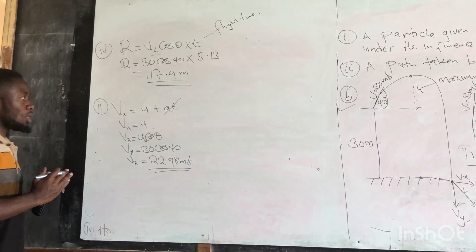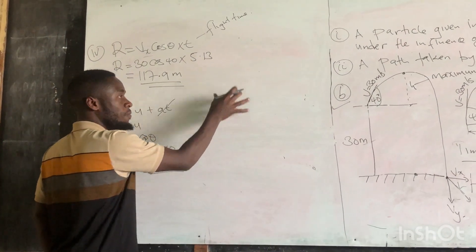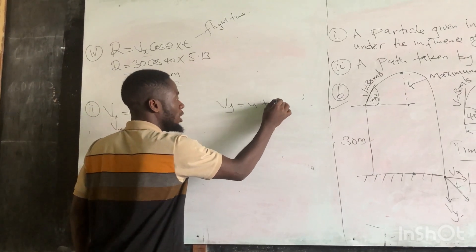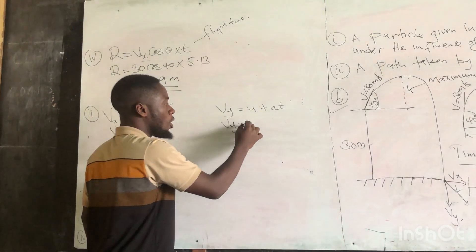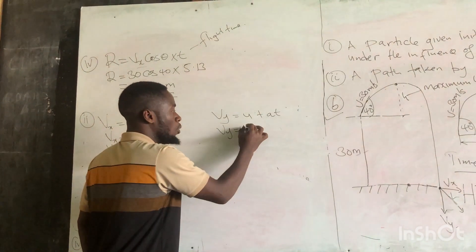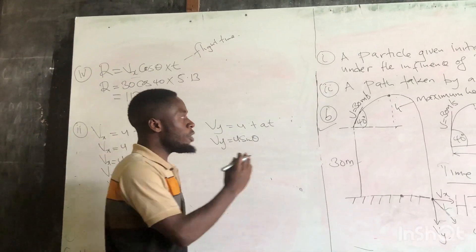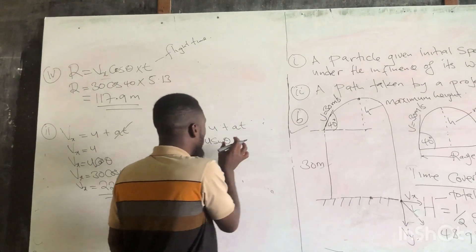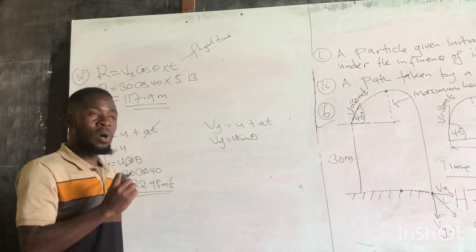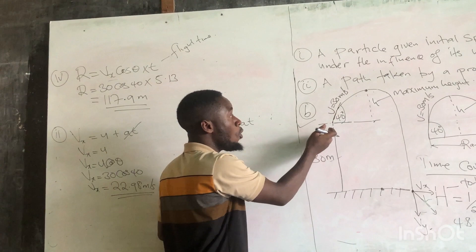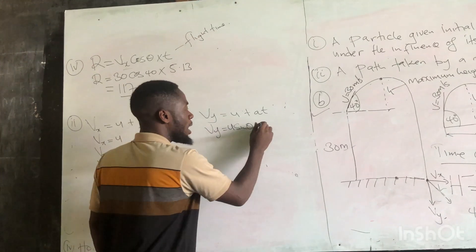How do we find the Vy value? Vy, which is velocity in the vertical, equals the initial velocity plus acceleration times time. Since the initial speed is given at an angle, Vy = U sin θ + at. The acceleration here is acceleration due to gravity. When you kick a ball it moves upward in the vertical, so it is going against gravity, meaning the acceleration is negative. So it will be minus gt.